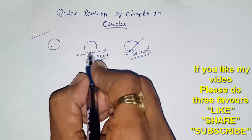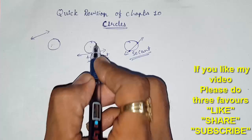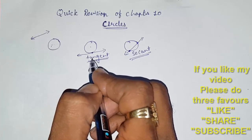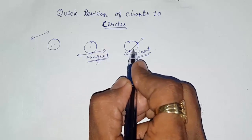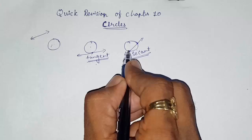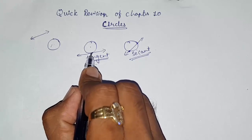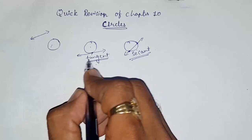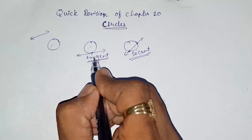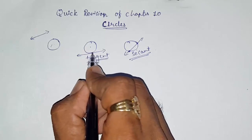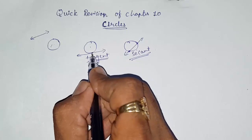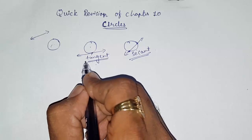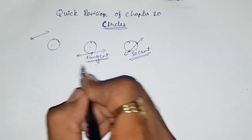The definition of tangent from your textbook is very important — I have seen it asked in one or two papers. The definition is: the tangent to a circle is a special case of a secant when the two endpoints of its corresponding chord coincide, meaning both endpoints meet at one single point. Please remember this definition.